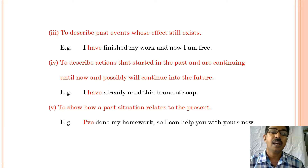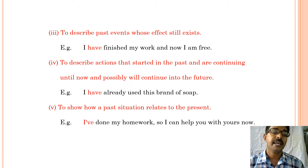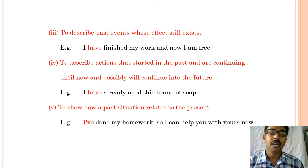Present perfect tense is also used to describe events whose effect still exists. Example: I have finished my work and now I am free. This tense is also used to describe actions that started in the past and are continuing until now and possibly will continue in the future.